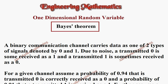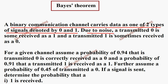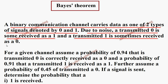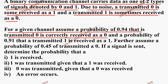The question: it is given a binary communication channel carries data as one of two types of signals, denoted by 0 and 1. Due to noise, a transmitted 0 is sometimes received as 1, and a transmitted 1 is sometimes received as 0. For a given channel, assume a probability of 0.94 that a transmitted 0 is correctly received as 0, and a probability of 0.91 that a transmitted 1 is received as 1.